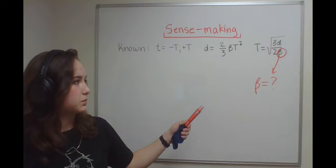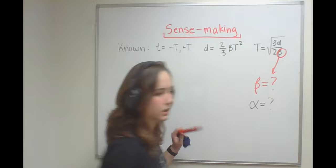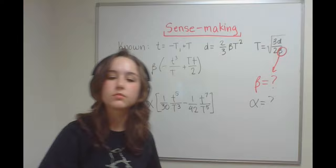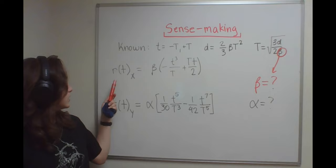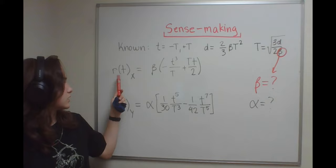One way you can deal with that is by checking units. So using sense-making with units, you can use the position function, x component and y component, to determine what alpha and beta are.